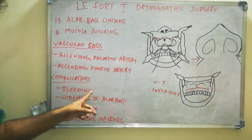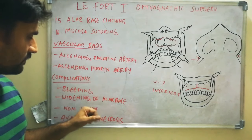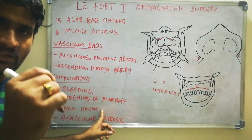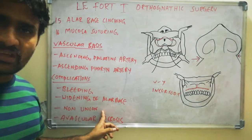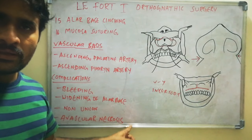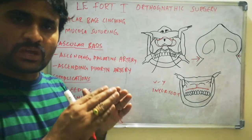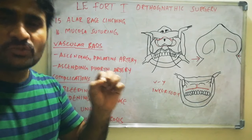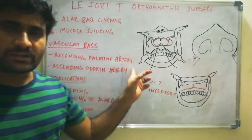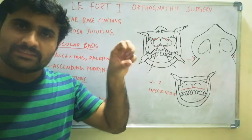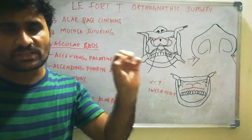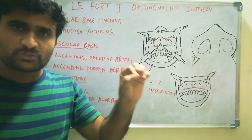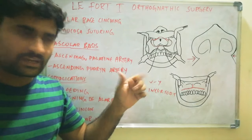The complications of Le Fort 1 osteotomy include: bleeding, especially due to injury of the descending palatine artery; widening of the alar base if cinching is not done; non-union; and avascular necrosis of the maxilla. Avascular necrosis means there is no blood supply to the osteotomized maxilla. It is important to preserve the posterior palatal soft tissue pedicle, because the ascending palatine and ascending pharyngeal arteries run in the posterior soft tissue, particularly the palatal pedicle. If you injure the soft tissue pedicle during down-fracturing, it will result in compromised blood supply leading to avascular necrosis.